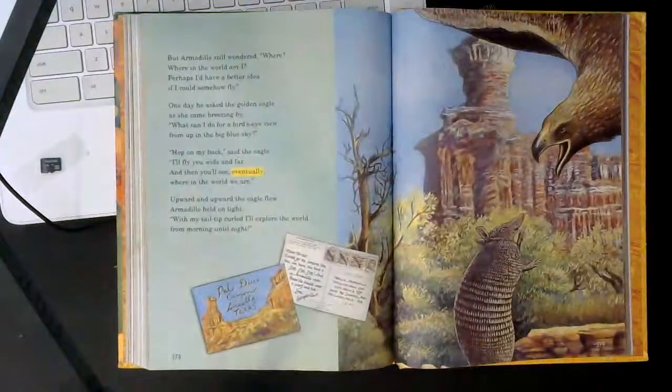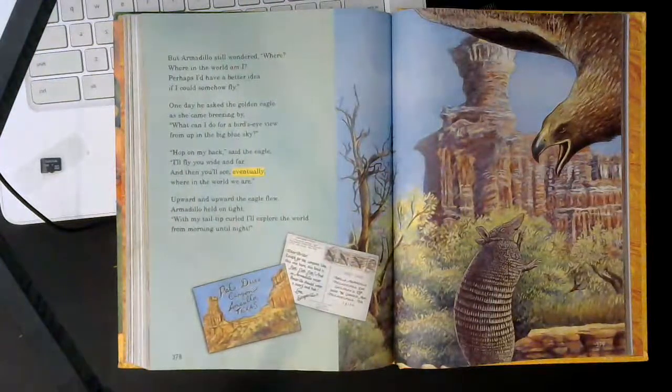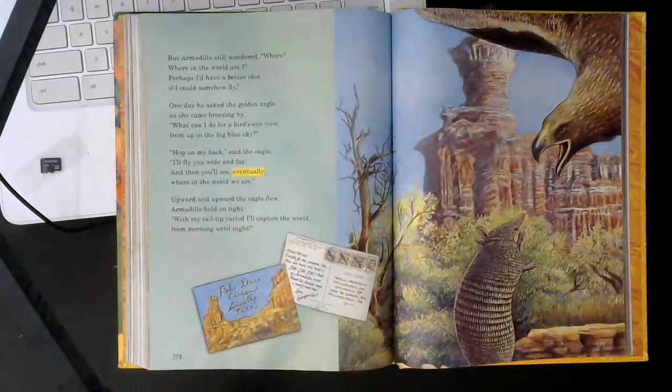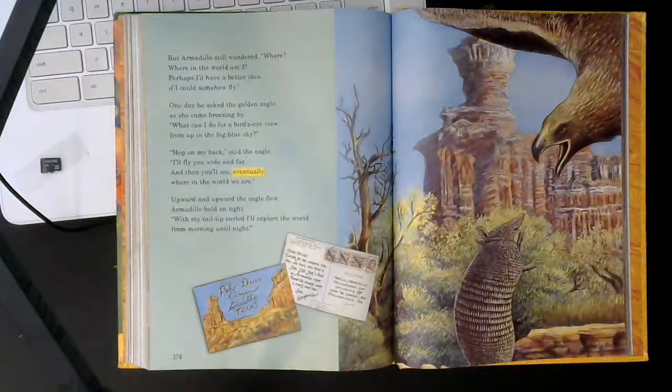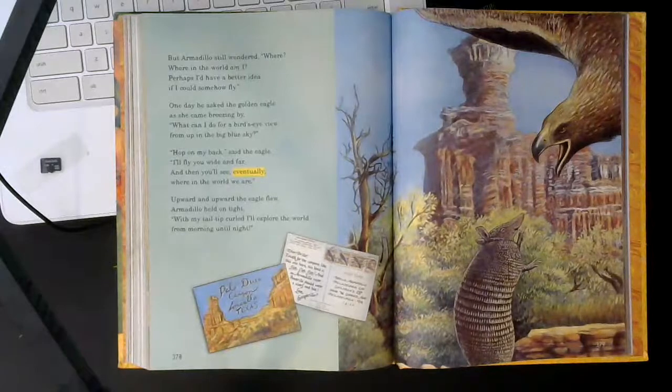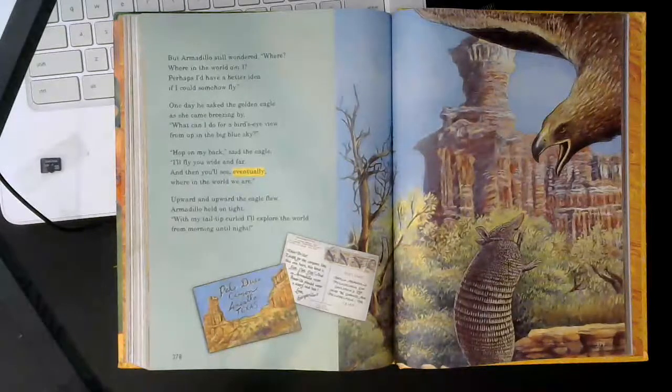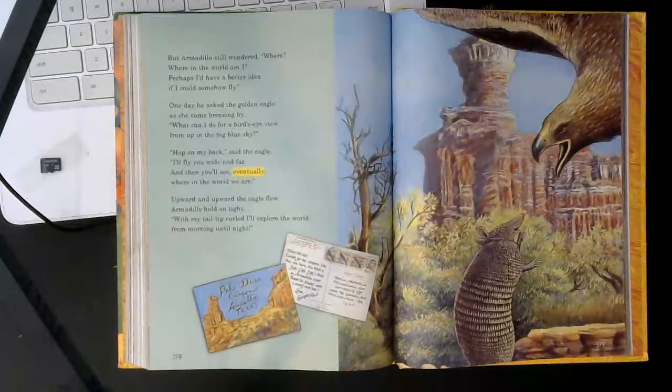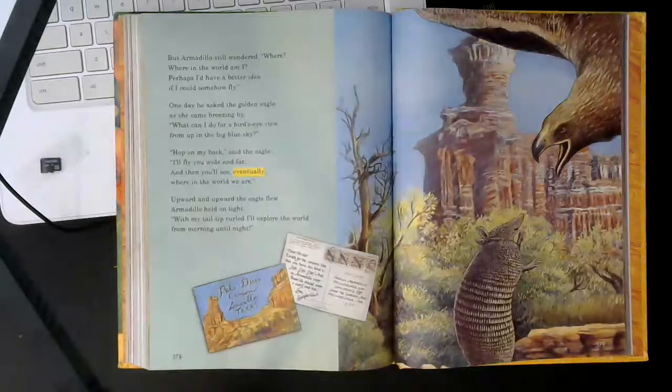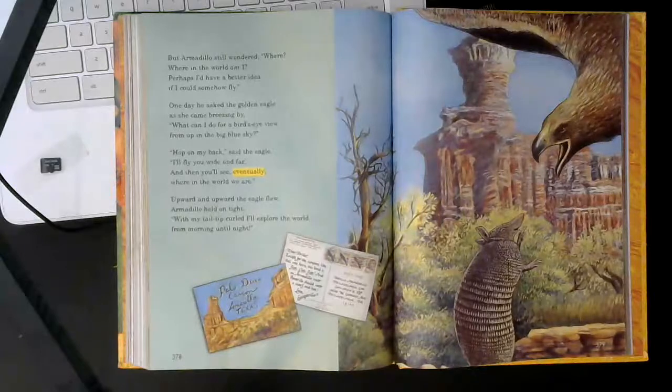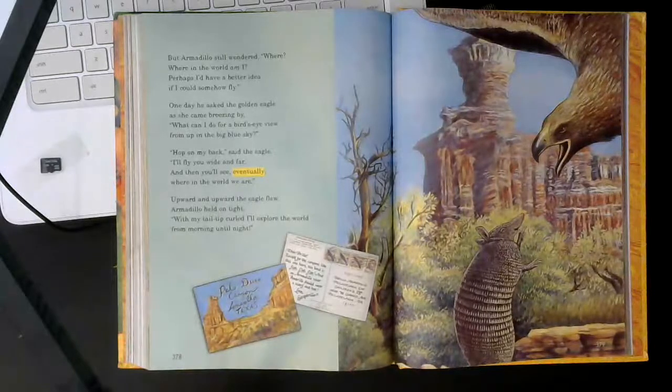But Armadillo still wondered, where? Where in the world am I? Perhaps I'd have a better idea if I could somehow fly. One day he asked the golden eagle as she came breezing by, what can I do for a bird's eye view from up in the big blue sky? Hop on my back, said the eagle. I'll fly you wide and far and then you'll see eventually where in the world we are.